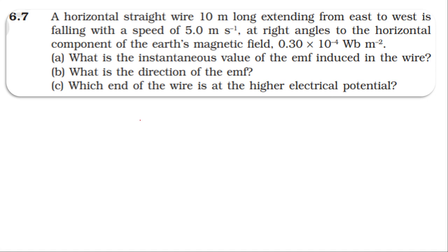The wire extends in the east to west direction. It falls in the downward direction. The magnetic field direction is towards north - south to north direction. If we observe this direction, the length is 10 meters and velocity is 5 meters per second.